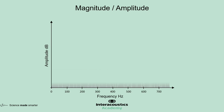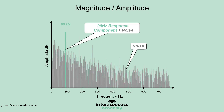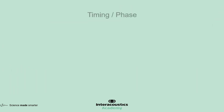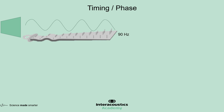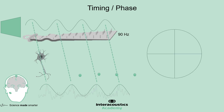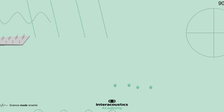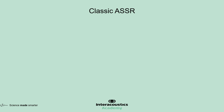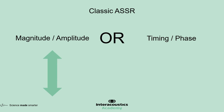Historically, there have been two methods of determining the level of certainty of the response. One method looks at the size of the response compared with the background noise and is called magnitude or amplitude-based detection. The other method looks at the timing of the response compared with the timing of the stimulus and is called phase detection. Once one of these criteria were met and statistically verified, classic ASSR systems reported a response being present.